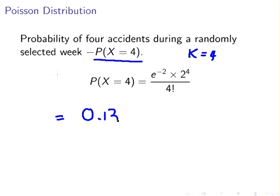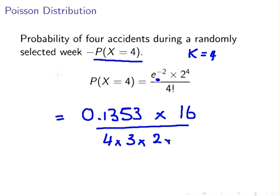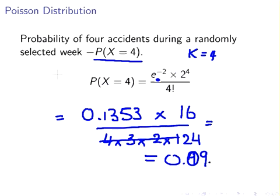...that's this number here. 2 to the power of 4 works out to be 16, and 4 factorial is 4 times 3 times 2 times 1, that works out to be 24. So working that out all together, that is 0.1353 times 16 divided by 24, which equals 0.0902. I worked to four decimal places. That is the answer to the first one - it's about 9 percent approximately.